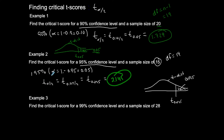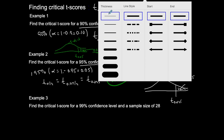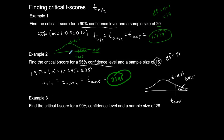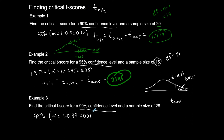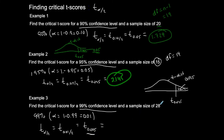Alpha over 2 is the area in one tail, degrees of freedom is one less than the sample size, and we use Table A3 to find the critical t-score. Now find the critical t-score for a 99% confidence level. Alpha = 1 minus 0.99 = 0.01, so t of alpha over 2 = t of 0.005. This is the area in one tail. Sample size is 28, so degrees of freedom = 27.